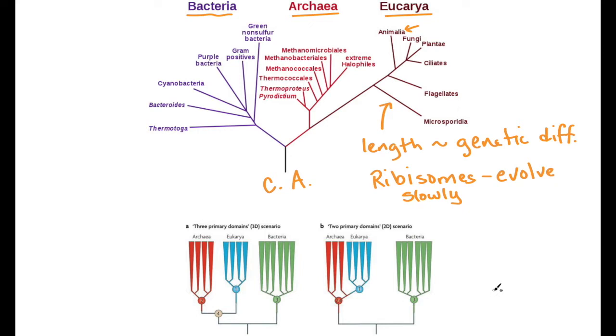One of the things that scientists have been really curious about is this branch point here. How are the eukaryota related to the archaea, related to the bacteria? If you remember, the earlier divisions had the eukaryotes separate from the prokaryotes over here because of those morphological differences.